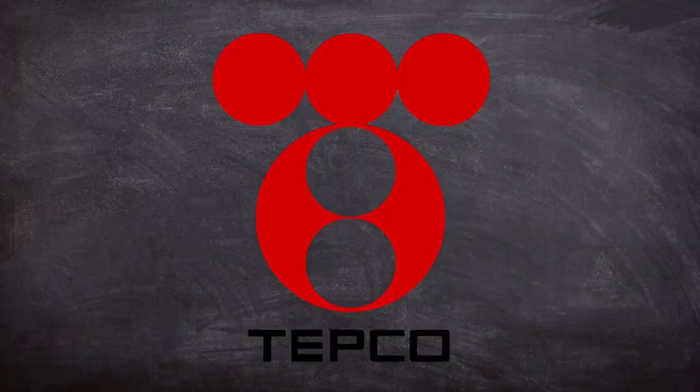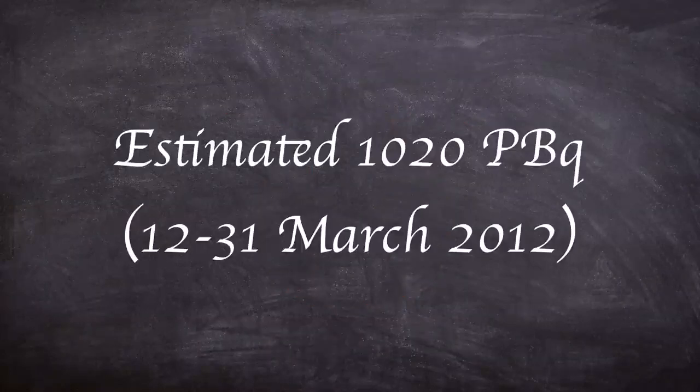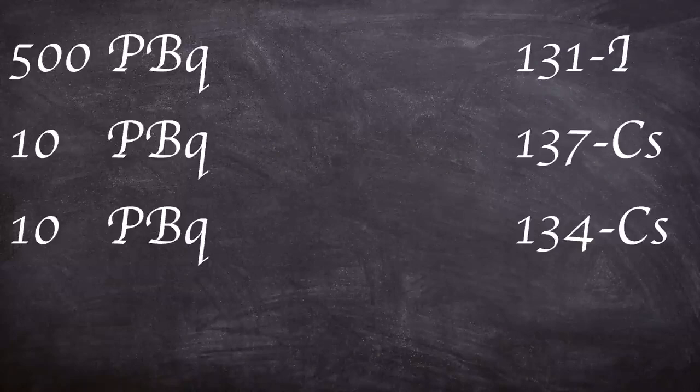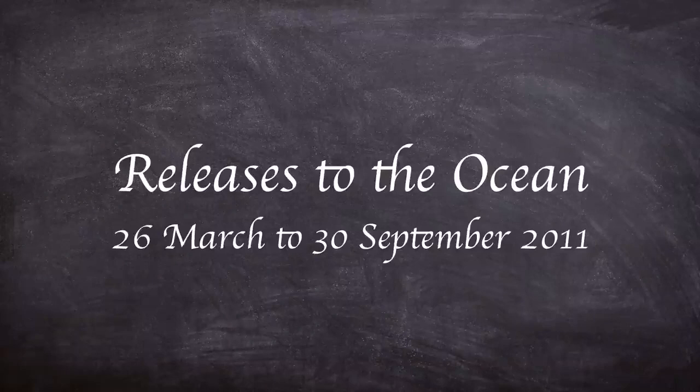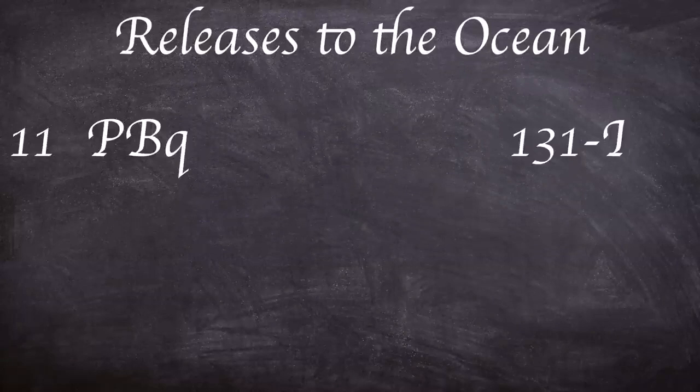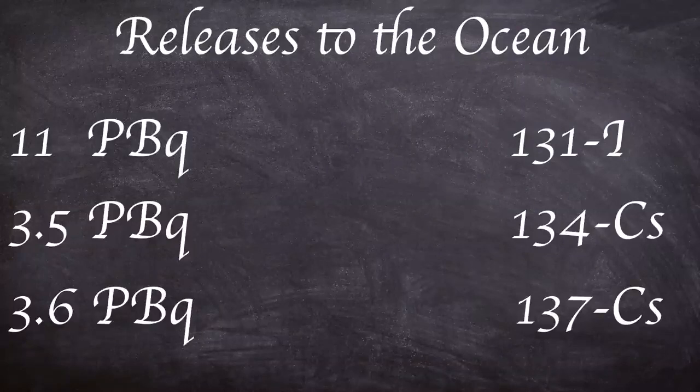TEPCO published in May 2012 an estimate of the amount of radioactivity released at Fukushima which was about 1,020 petabecquerels over the 12th to the 31st of March. 500 petabecquerels of iodine-131, 10 petabecquerels of cesium-137, and 10 petabecquerels of cesium-134. The remaining was noble gases mainly made up of xenon-133. Releases to the ocean over the 26th of March to the 30th of September were thought to be about 11 petabecquerels of iodine-131, 3.5 petabecquerels of cesium-134, 3.6 petabecquerels of cesium-137, a total of 18.1 petabecquerels.